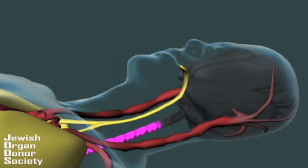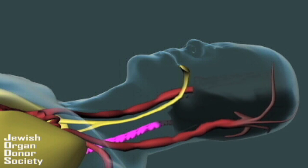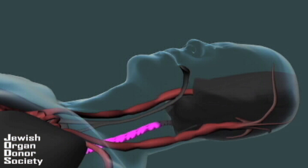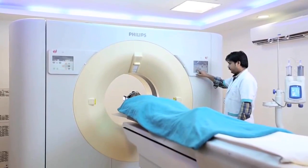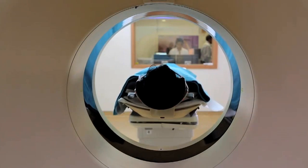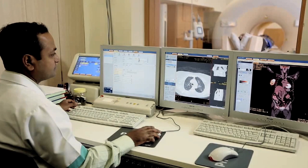This liquefaction makes brain death irreversible. Once the brainstem dies, the person stops breathing and the heart and the rest of the organs die due to oxygen deprivation. Modern medicine has many ways to determine if the brainstem has died. One way is to check for the neurological activities that the brainstem controls.